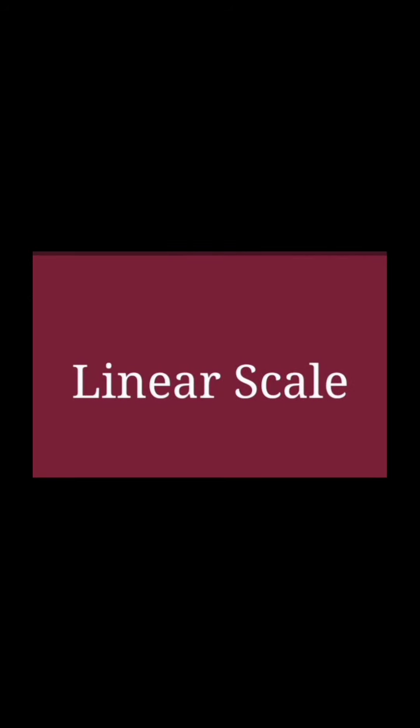Linear scale: In this method, a line is divided into some equal parts. You can see the diagram on page number 82. It is used on maps to show the relationship between a particular distance on the map and the actual distance on the Earth. A linear scale is also called a bar scale or a graphic scale.